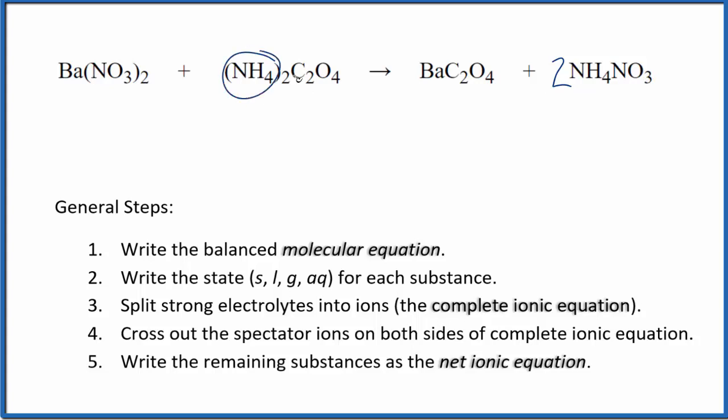That balances these ammonium ions. Now I have two nitrates here, but I have two nitrates here, so that's good. I have two barium atoms here and then the oxalate ion and another oxalate ion. So this is the balanced molecular equation.